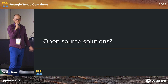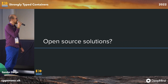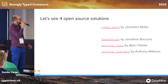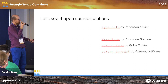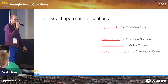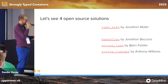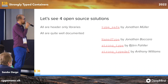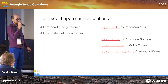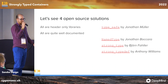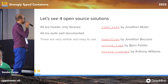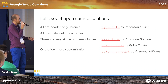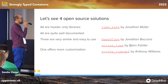Are there any open source solutions? Obviously there are. We're going to see four open source solutions quickly. There's a bit of difference between typesafe and the other three — strong_type, named_type, and strong_typedef. But essentially they are quite similar: they are all header-only libraries and they are all well documented. That was really a pleasure to read about them — they are very similar and easy to use.